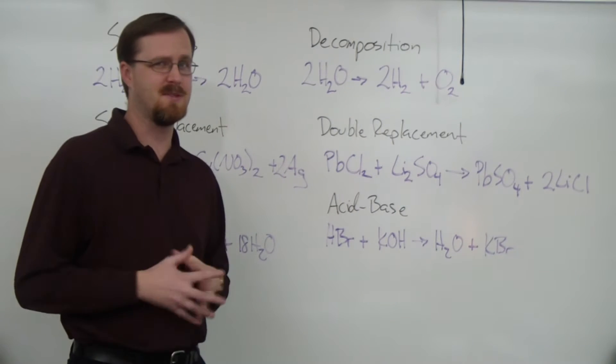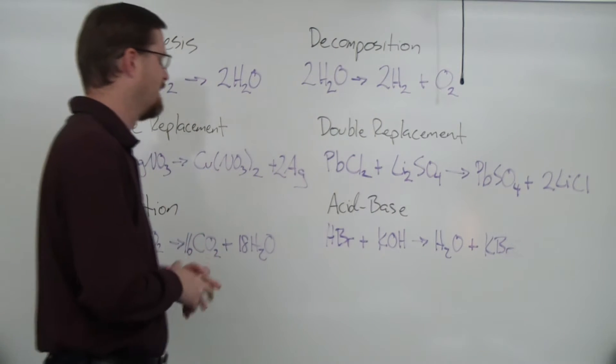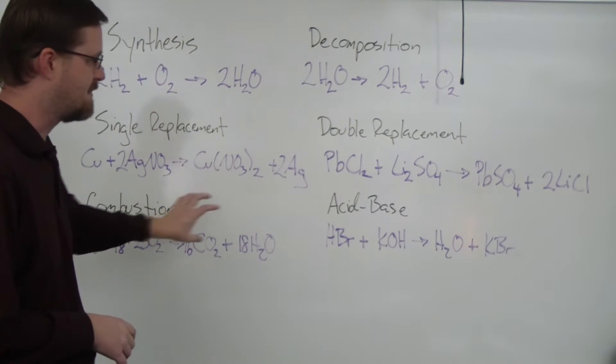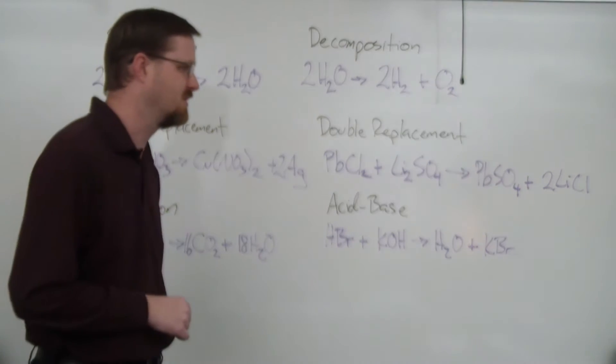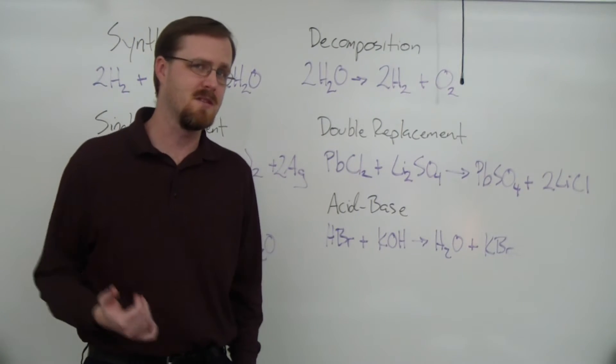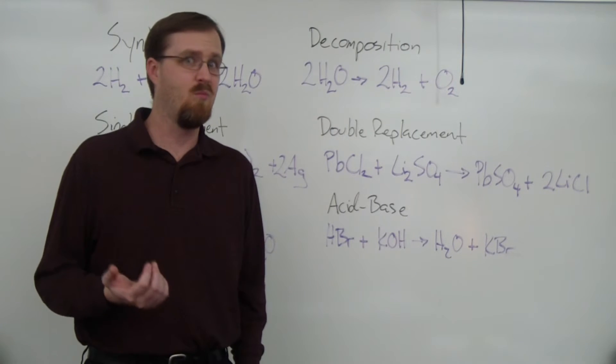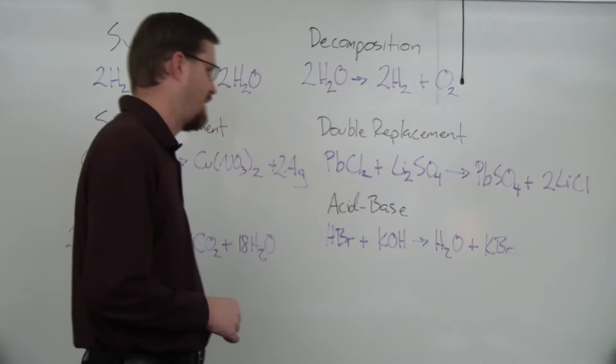We are talking about the different types of chemical reactions here. And as you can see, there are six main types of reactions. But before we get into what's different about all of them, let's take a look at what's actually the same about all of them.